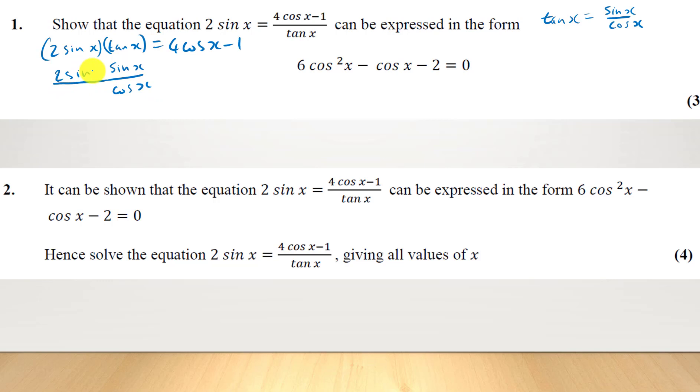So we've got 2sin(x) here, times sin(x) over cos(x) equals 4cos(x) minus 1 still. Now, if we multiply out both sides by cos(x) and simplify the top, that's going to be 2sin²x equals 4cos²x. Remember, we have to multiply the 1 as well, so that's minus cos(x).